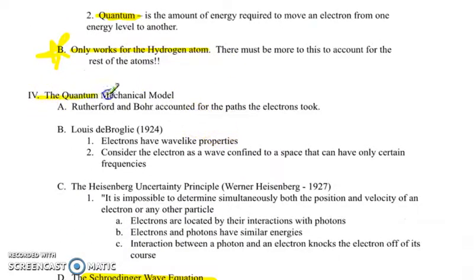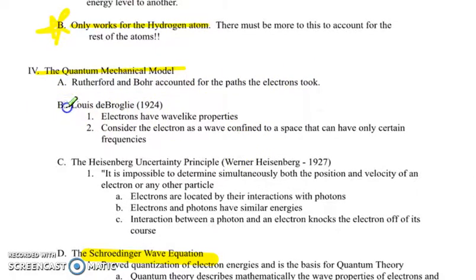And that brings us to the quantum mechanical model. Rutherford and Bohr accounted for the paths that electrons took. And then Louis de Broglie came around, and he was looking at the electrons and their wave-like properties. He considered the electron as a wave confined to a space that can have only certain frequencies. So the truest way to think about an electron is to visualize like a small vibrating string, like a guitar string, confined to an infinitesimally small piece of space. So it's like a particle, but a particle is a tiny wave that is stuck.